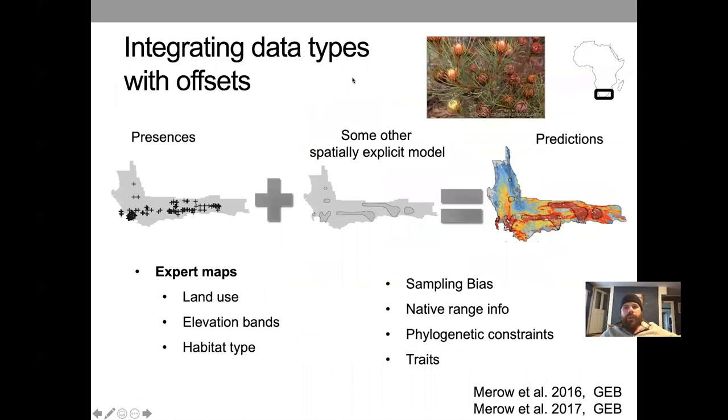A different way of using these offsets is to incorporate other types of information that are from other data sources. So one way to do this is to consider a priori that you do know something about where the species occurs. For example, you may have an expert map where an expert said, here are some polygons that describe where I think this thing occurs. So your best guess a priori is that the expert's right. And so you may want to maximize similarity to this expert map. And there could be, you know, information on land use or elevation bands or habitat types, any number of other things. Basically this is kind of a simplified hack at a hierarchical model. That's a bit easier to implement. And so I wrote a paper on this using expert maps.